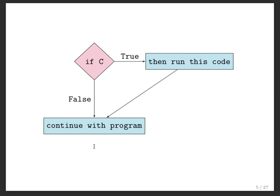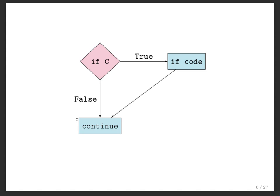Sometimes it's useful to draw these if statements as decision trees or flowcharts. We usually denote decisions by a diamond. So the if statement can be drawn like this: if some condition is true, then run this code and continue with the program; if the condition is false, then just continue with the program. Anything in a blue block is implicitly assumed to be code, and anything in diamonds are assumed to be decisions. If the condition is true, run the if code, then continue; if false, just continue.